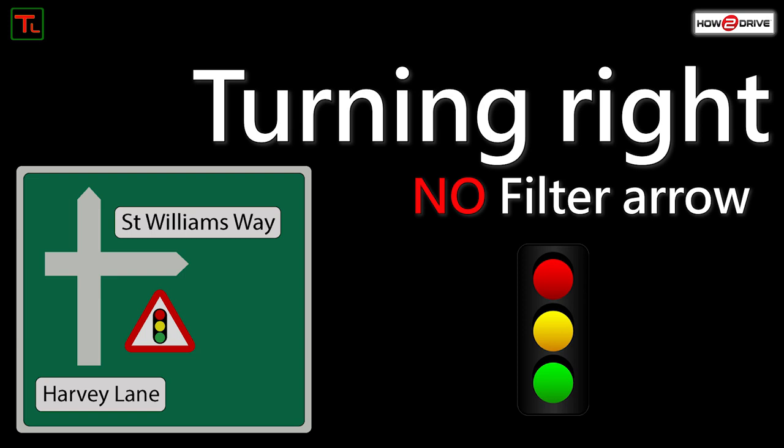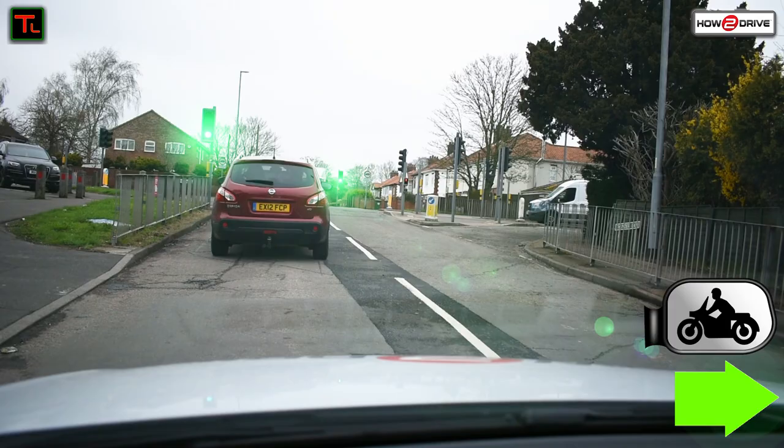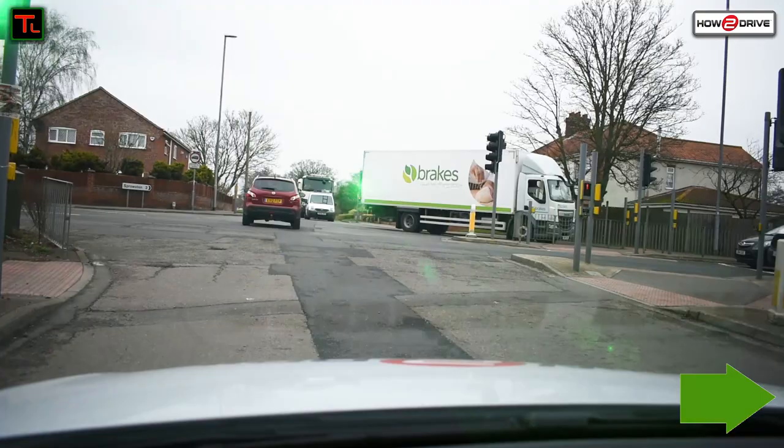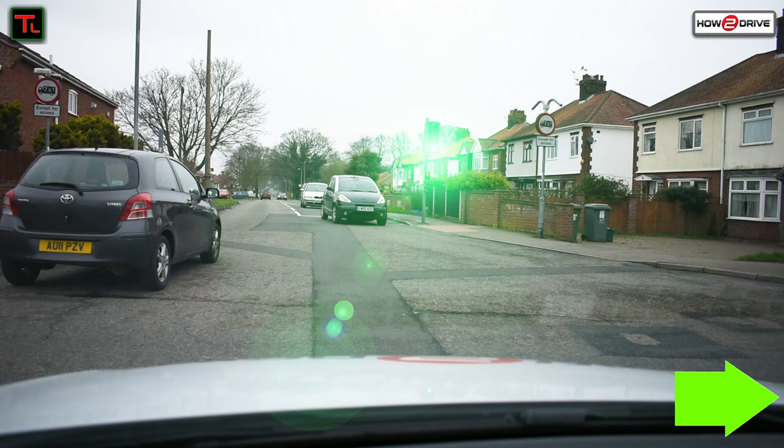Back to the same junction but the opposite approach this time — there will be no filter arrow. While we're waiting we're going to check those mirrors. Lights are changing, we've got our signal on. Lights on green. We're going to position left of centre and with no filter arrow this time we'll give way to oncoming traffic. Notice the van passes in front of us. We're going to position at our turning point looking for a safe gap. Check those mirrors, signal still on — there's the gap. Notice the lights are changing there. Into the new road and away we go.